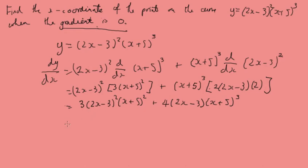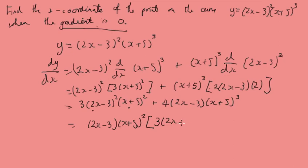Now we factorize. We have (2x minus 3) appearing in both terms — with power 2 and power 1 respectively — and (x plus 5) appearing with powers 2 and 3. We take out (2x minus 3) and (x plus 5) squared as common factors, leaving 3 and 4 inside the bracket.